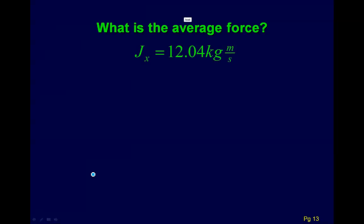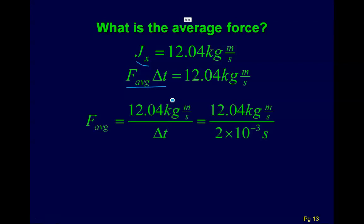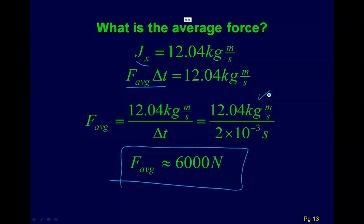Now, the problem could have asked, next, what is the average force? And that's not so bad. The average force, remember, we can think about the impulse as average force times change in time. We know what the impulse is - it's just the 12.04. We divide by the time, and you get kind of a big force. And, of course, these numbers are pretty typical numbers, and so this is a good estimate for the average force for a baseball hitting a bat.